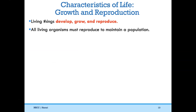Another characteristic of life is that living things develop, grow, and reproduce. All living things must be able to reproduce to maintain a population, but there are some exceptions. A good example would be a mule — a hybrid animal of a horse and a donkey — which is unable to reproduce itself. And of course, not every individual reproduces; not all humans decide to have children. But there must be enough reproduction in a species to maintain that population.